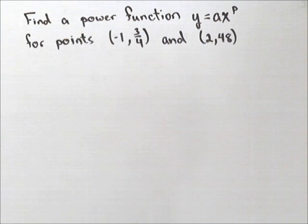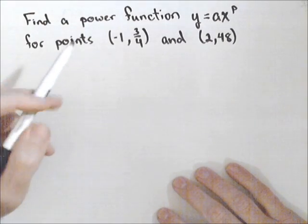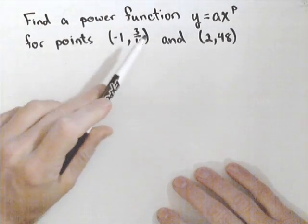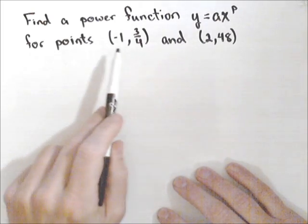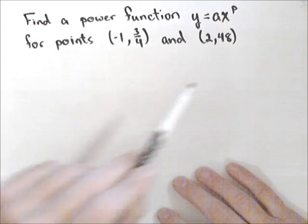In this video, we're going to look at how to find a power function given two points. One of the interesting properties of power functions is that we can find the function y = ax^p going through the points (-1, 3/4) and (2, 48).